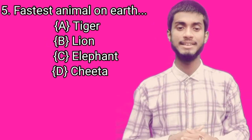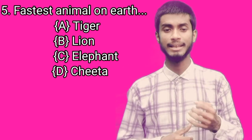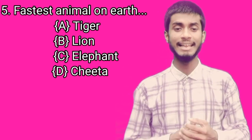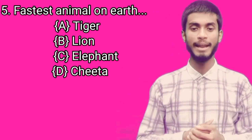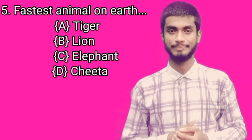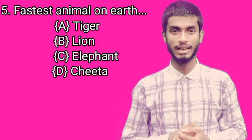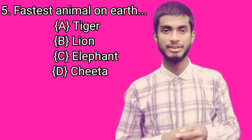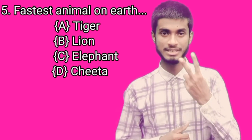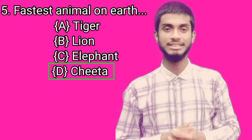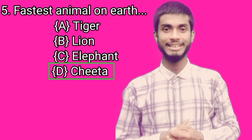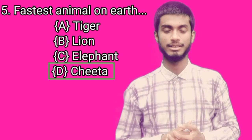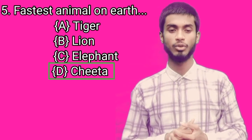Next question: what is the fastest animal on earth? A) Tiger, B) Lion, C) Elephant, and D) Cheetah. Your time is up. Your answer is Cheetah. Cheetah is the fastest animal on the earth.